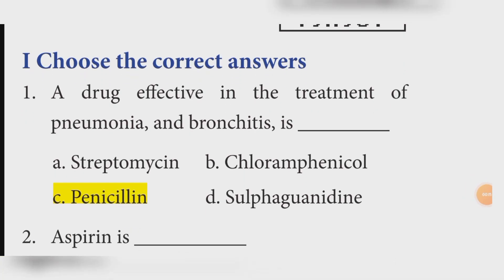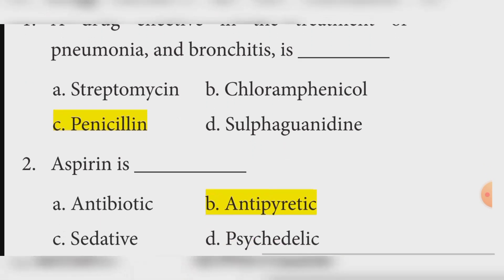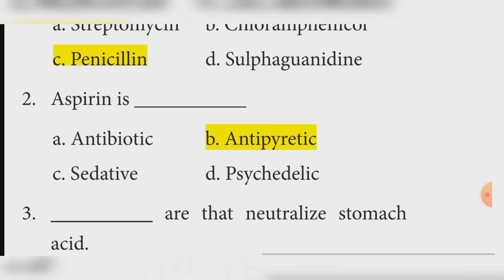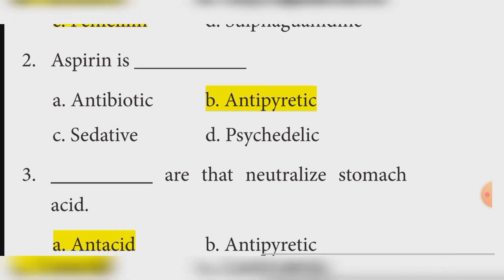First one: a drug effective in the treatment of pneumonia and bronchitis. Answer: (a) benzylpenicillin. Second one: aspirin is a type of drug. Answer: (a) antipyretic.